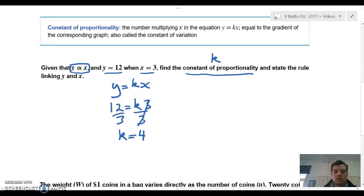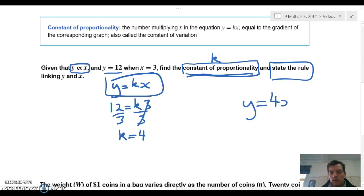So we've done the first part in finding the constant of proportionality. Now we're asked to state the rule. So all we now need to do is substitute our k-value back in to y equals kx. So the rule is actually y equals 4x.